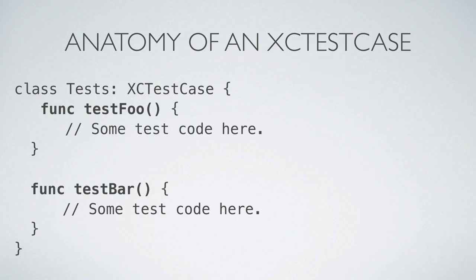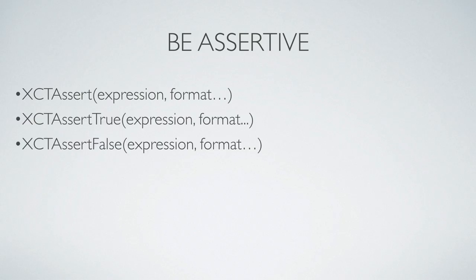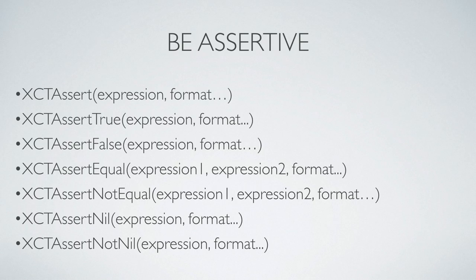Within each test case, every method that begins with the word 'test' is executed and determines a pass or a fail. What determines if a test passes? Assertions. The simplest test you can write is an assert — the test passes when the expression evaluates to true, and if it fails, the format string is printed out to the console. There are other types of assertions available: they can test Boolean logic, equality, and perform nil checks, just to name a few.